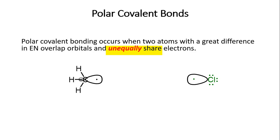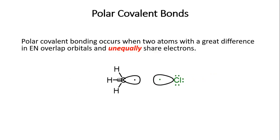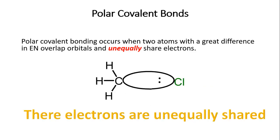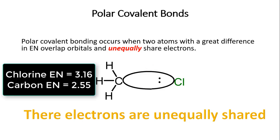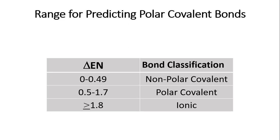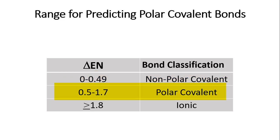In a carbon–chlorine bond, the orbitals overlap but the electrons favor chlorine because chlorine is more electronegative. We classify bonds by the electronegativity difference (ΔEN): 0 to 0.49 is non-polar covalent, 0.5 to 1.7 is polar covalent, and greater than 1.8 is ionic. This chart allows us to classify bonds based on the ΔEN between the two bonded atoms.